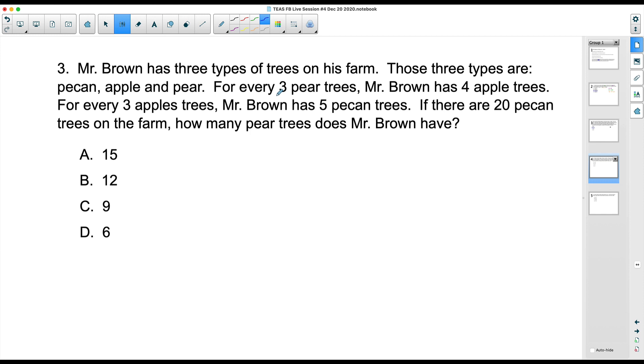So if I look at this first sentence, for every three pear trees, so I'm going to put a pear, Mr. Brown has four apple trees. So I'm going to put a four at the bottom. And this represents apple. Now, that proportion can only compare pears and apples. Let's look at the next sentence. For every three apple trees, you might say, well, why don't we put a three over here? Watch what I'm going to do here. So this three represents apples, apple trees. And for every three apple trees, Mr. Brown has five pecan trees. So I'm creating two separate proportions because here I'm comparing pears to apples. And over here, I'm comparing apples to pecans. We cannot set these two things up in a single proportion.